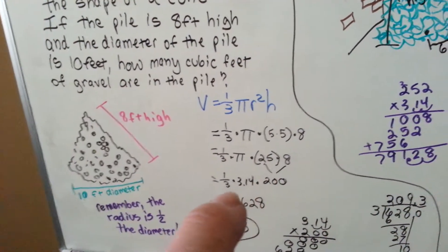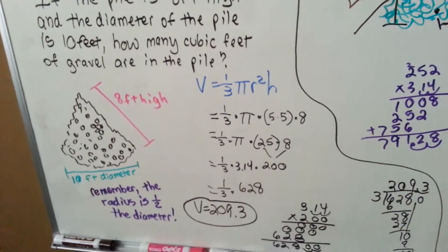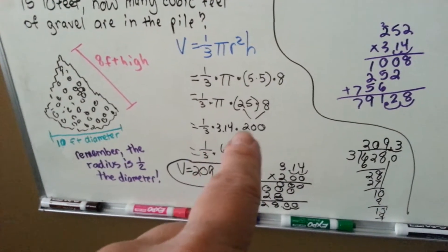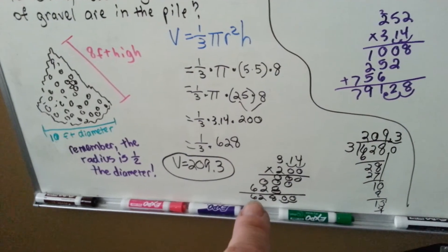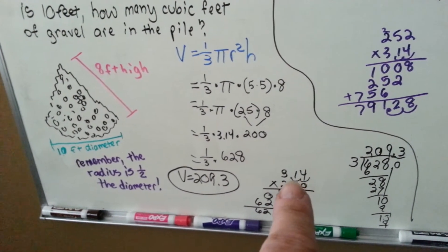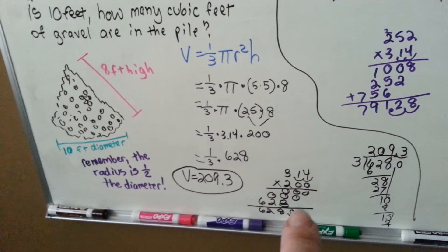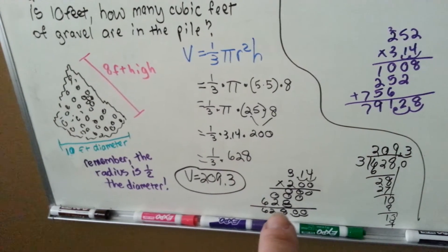So, now we need to multiply the 1 third times the pi, 3.14, times the 200. So, here's the 3.14 times 200. It comes out to 628. And because there was two decimal points in the 3.14, I moved it over in the answer. So, that took the zeros off, so we only have 628.